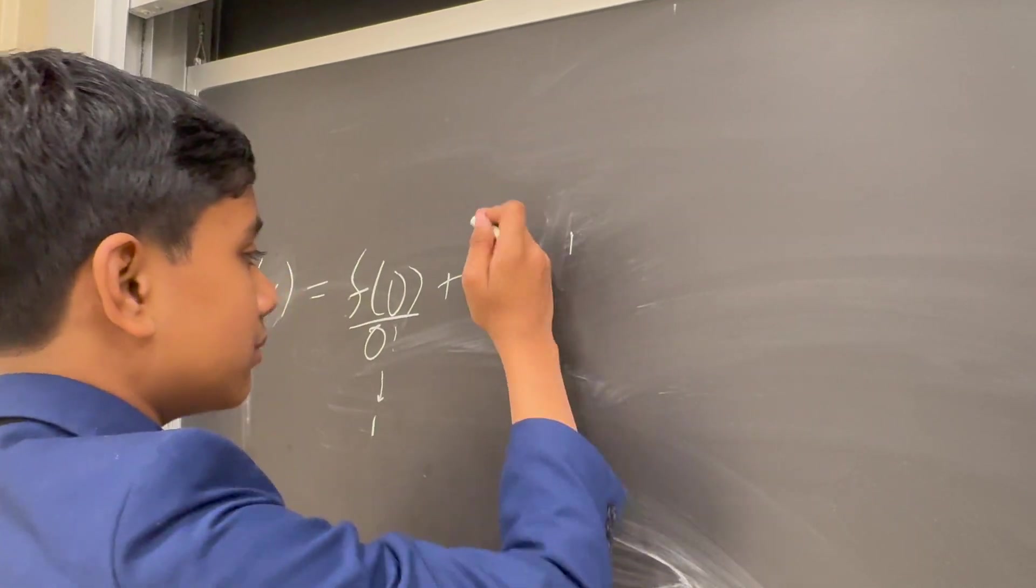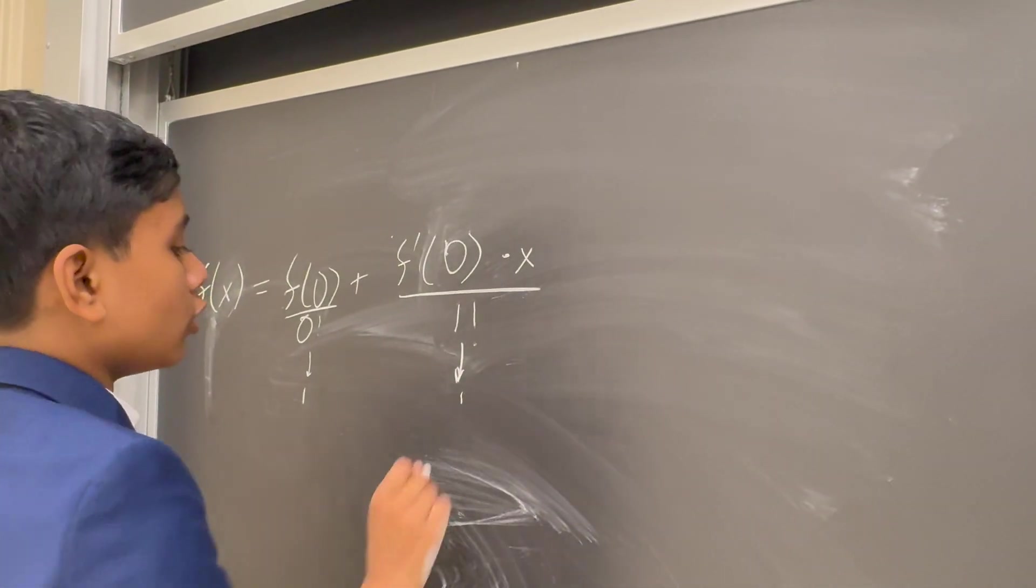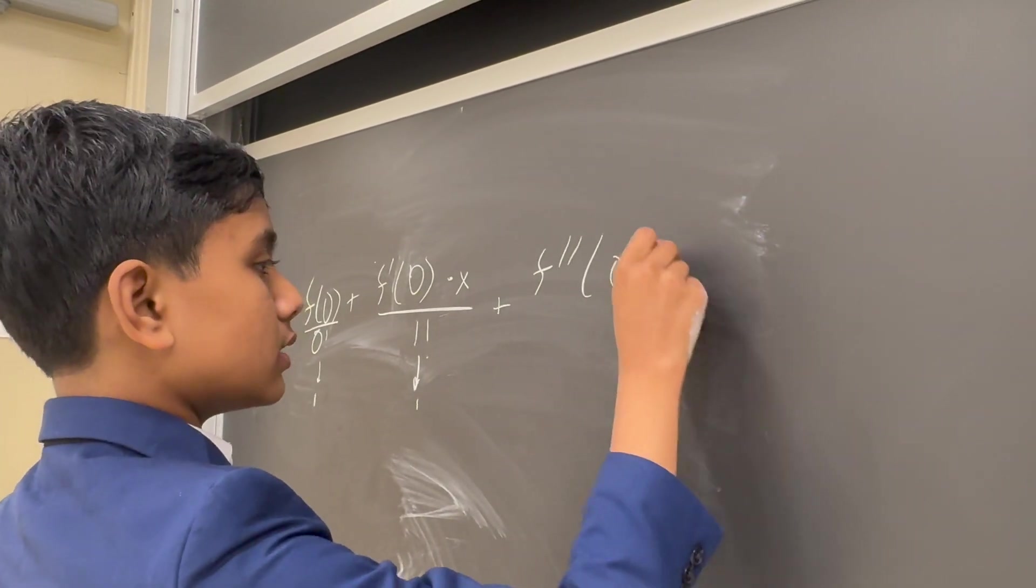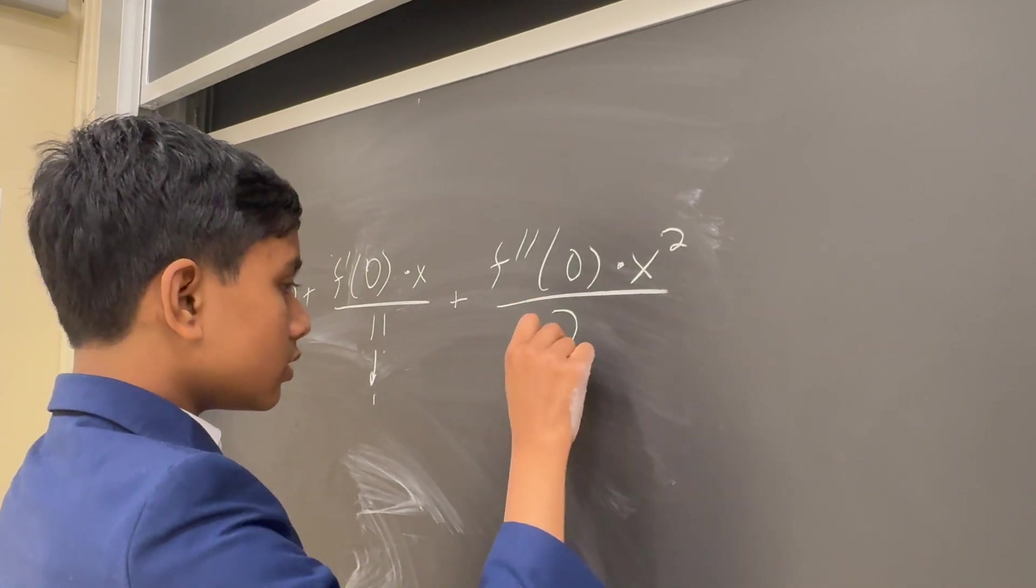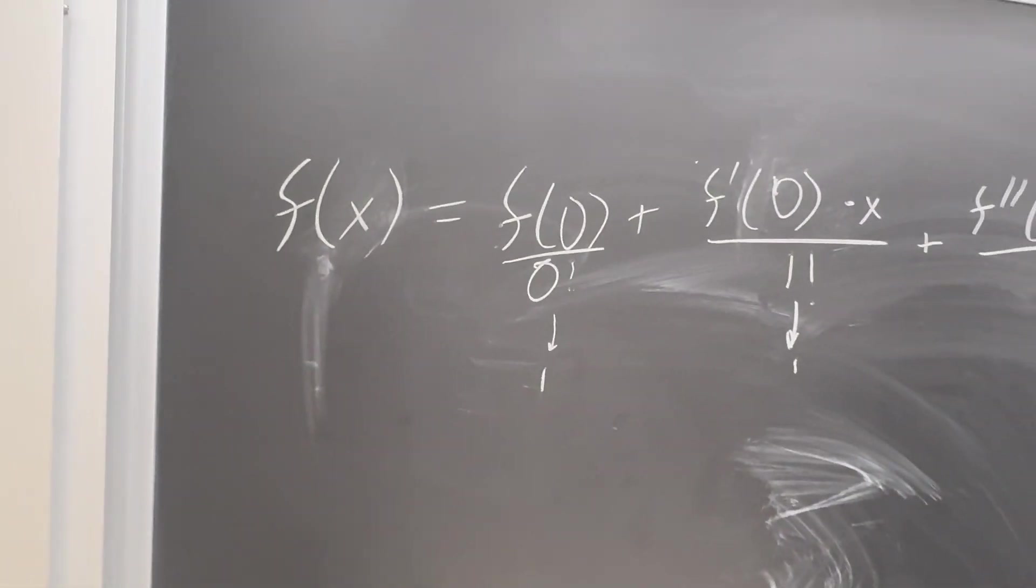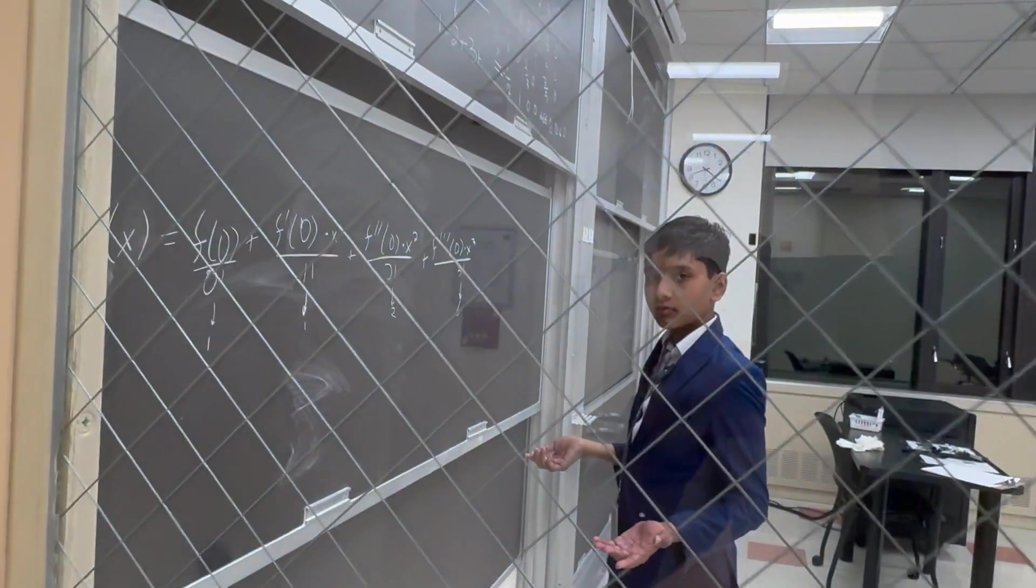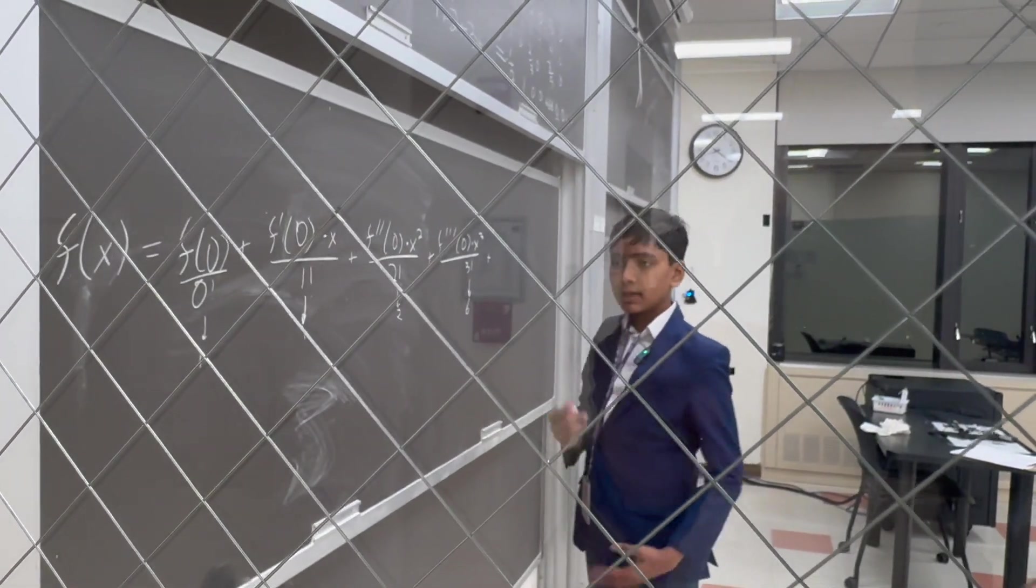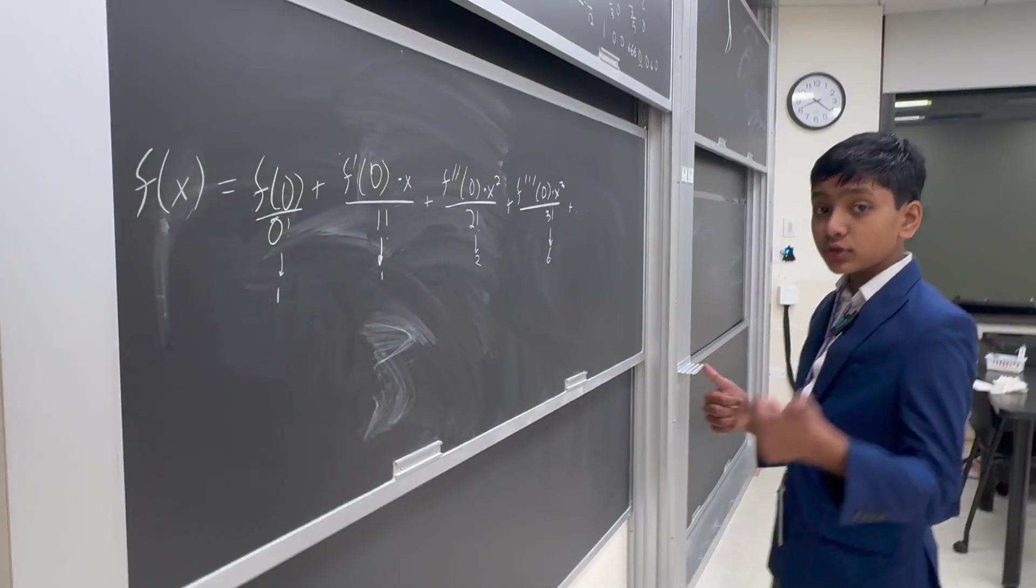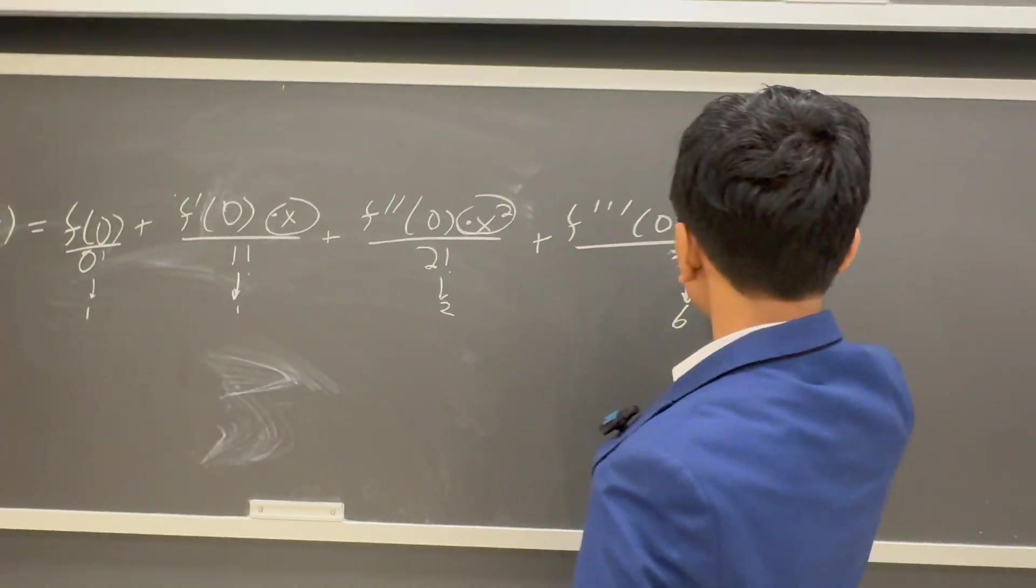Not f of 1, that would be dumb. So f prime of 0 times x over 1 factorial, which is also 1, plus f double prime of 0 times x squared over 2 factorial, which is 2, plus f triple prime of 0 times x cubed over 3 factorial, which is 6, and so on and so forth. So this continues on and on forever as an infinite series. And it turns out it converges pretty quickly for most functions. So now you probably see where the motivation with all the repeating exponents comes from.